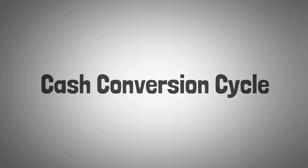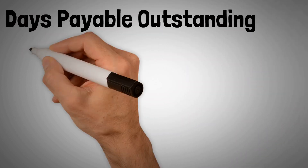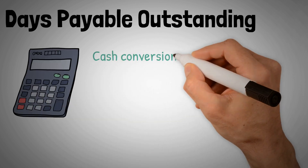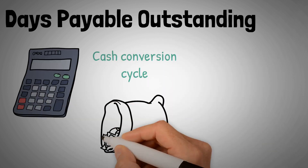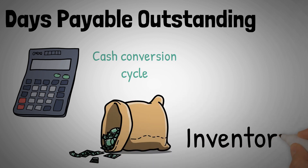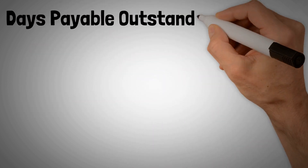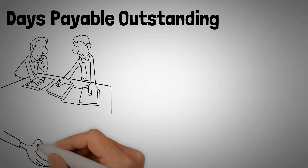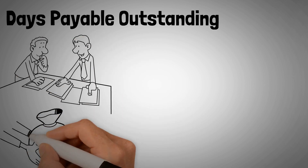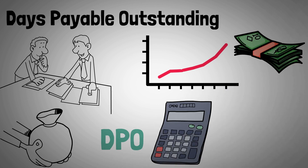Cash conversion cycle. Another facet of Days Payable Outstanding is that it is used in the calculation for the cash conversion cycle. This metric measures how long it takes for money spent on raw materials to be converted into inventory, and then to be converted back to cash via sales. In summary, Days Payable Outstanding is a number indicative of how long a company is taking to pay its suppliers. While a high number is usually preferable, it is not always the case. DPO is also used to calculate a number for the cash conversion cycle.